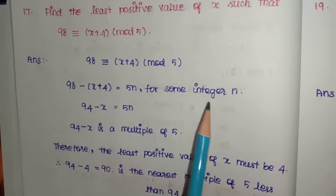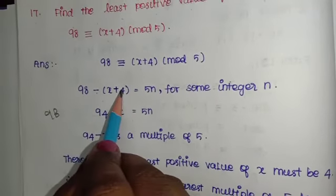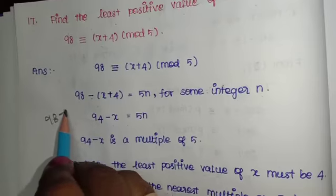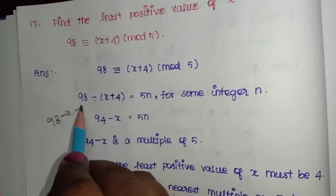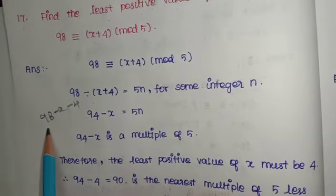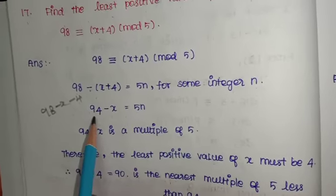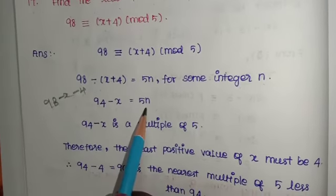For some integer n, 98 - (x+4) = 5n. Opening the bracket: 98 - x - 4 = 5n. So 94 - x = 5n.